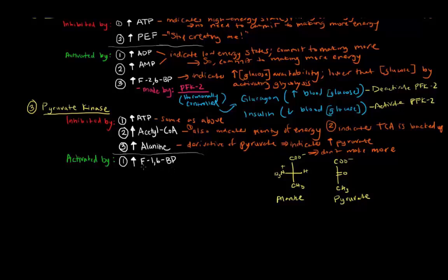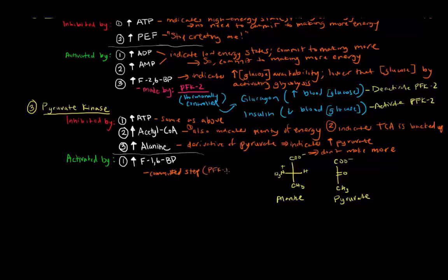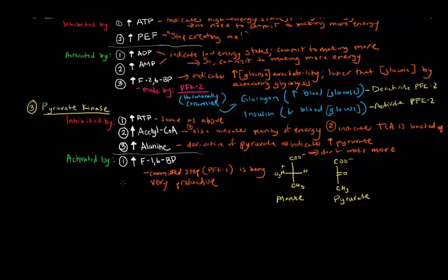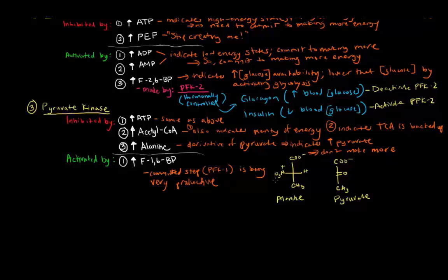High levels of fructose 1,6-bisphosphate activate pyruvate kinase. If there's a lot of F1,6-BP around, it means the committed step — the PFK1 step — is being very productive and we're committing to glycolysis a great deal. We don't want to get to phosphoenolpyruvate and have pyruvate kinase unable to proceed. If we're committing to glycolysis, we want to make sure we finish it. So high levels of the committed molecule activate the completion of glycolysis. I hope that was helpful in clearing things up as far as allosteric regulation of glycolysis.